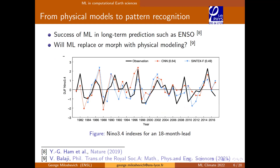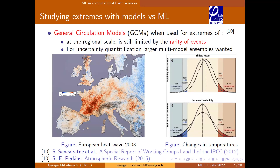Machine learning has shown success in predicting events such as El Niño Southern Oscillation over the long term. Here you can see the ENSO index as a function of years — black is observation, the convolutional neural network prediction matches relatively well, and the method of analogues may also work well in these situations.